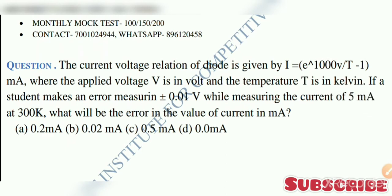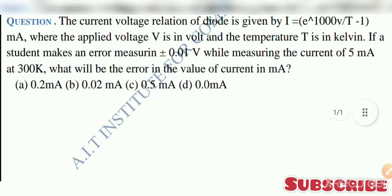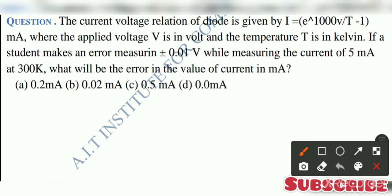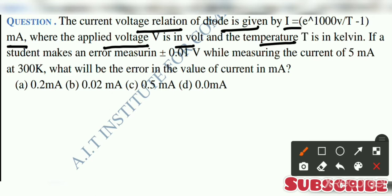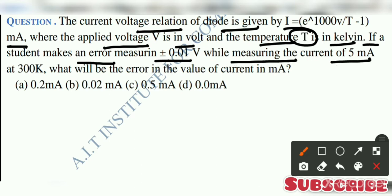Let's go to the question. The current-voltage relation of a diode is given by I equal to e to the power of 1000V by T minus 1 milliampere, where the applied voltage V is in volts and the temperature T is in Kelvin. If a student makes an error of plus minus 0.01 volt, measuring the current of 5 milliampere at 300 Kelvin, what will be the error in the value of current in milliampere?